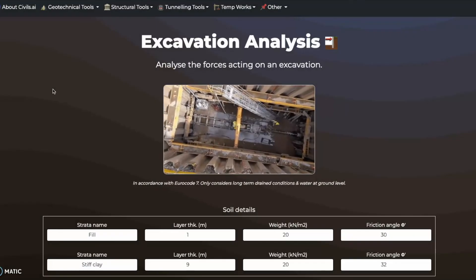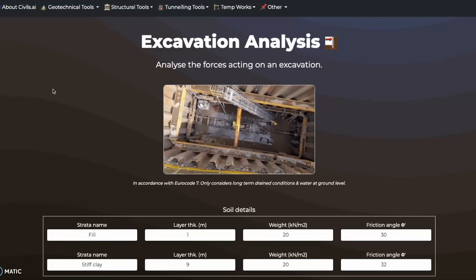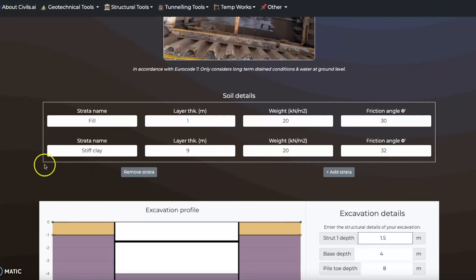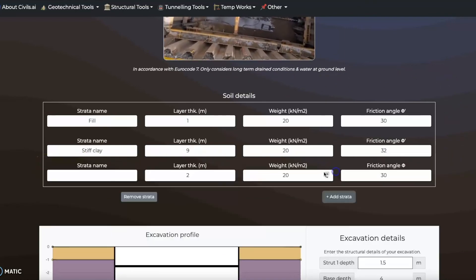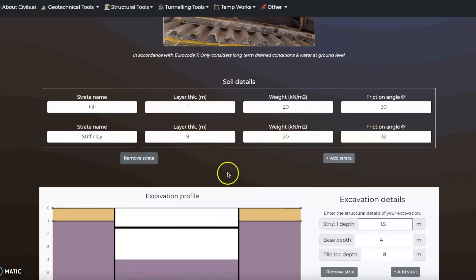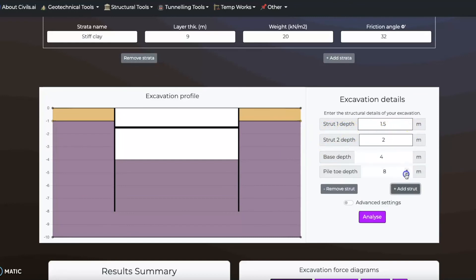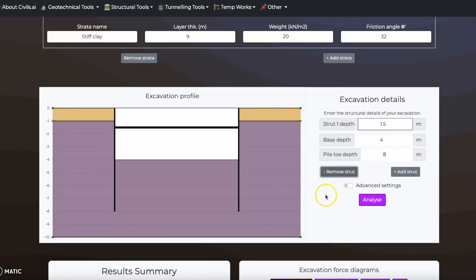Let's look at how civils.ai can be used to analyze an excavation. First, we can edit the soil profile and the drain properties of the soil. Layers of soil can be added or removed with these buttons. Next, we can modify the profile of the excavation itself. We can change the depth of the excavation, the depth of the toe of the wall and the strut position. We can add or remove struts using these buttons.